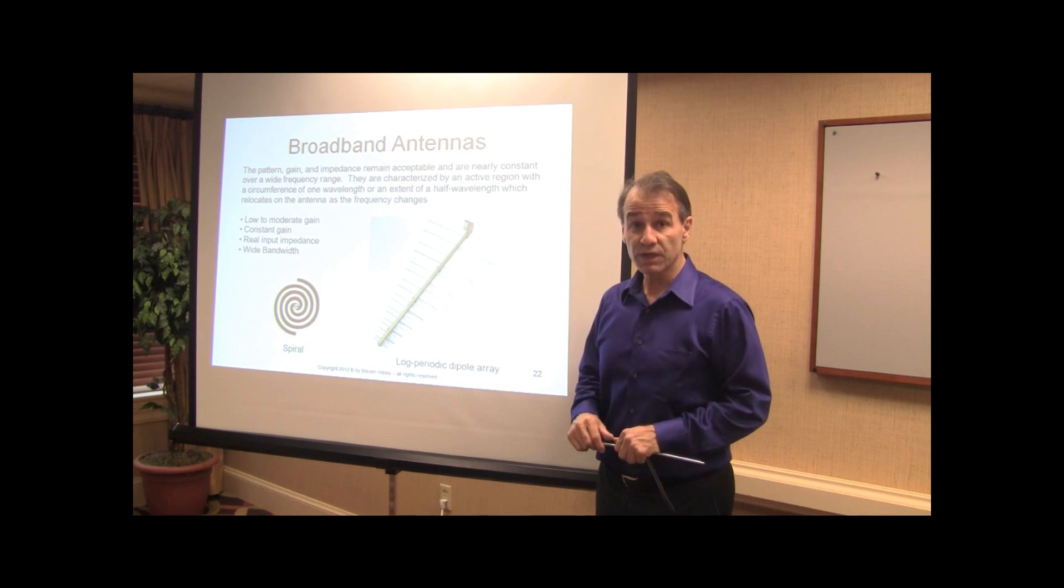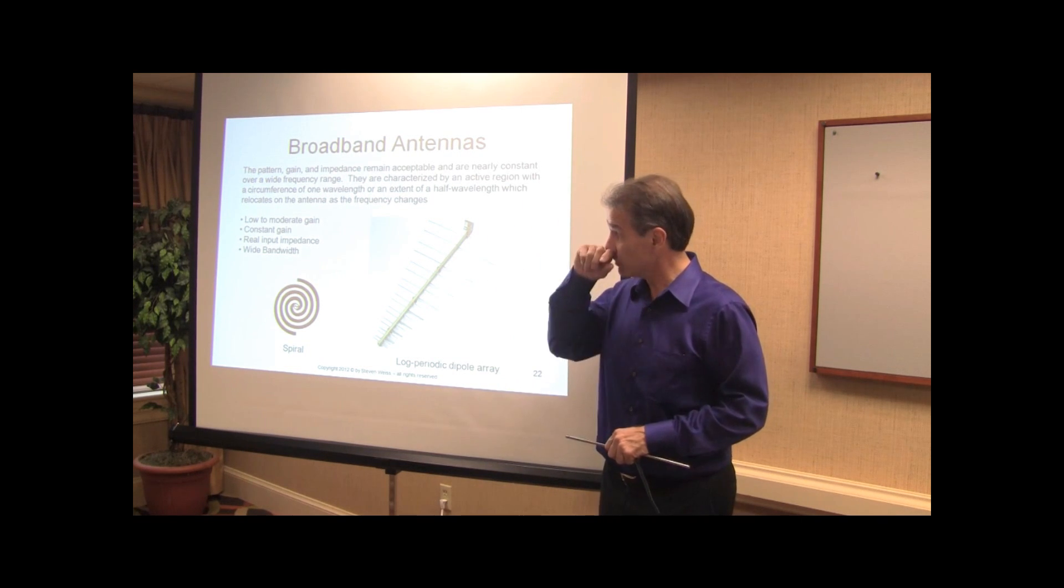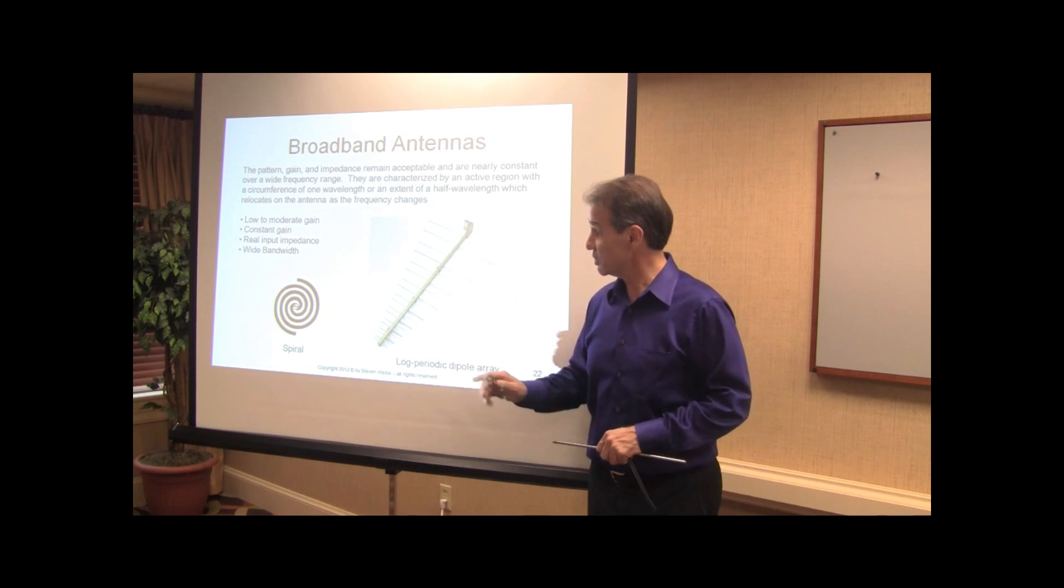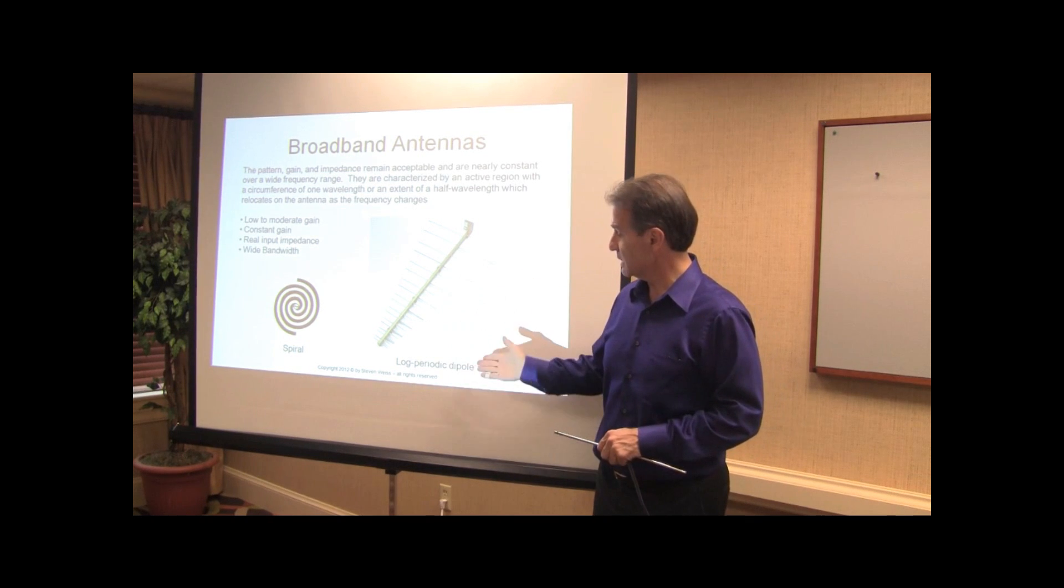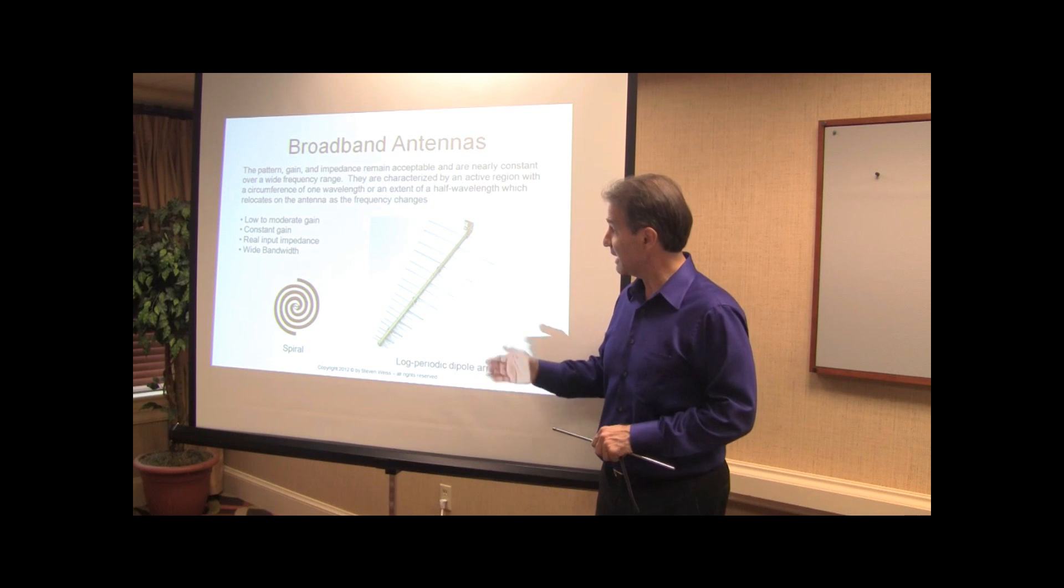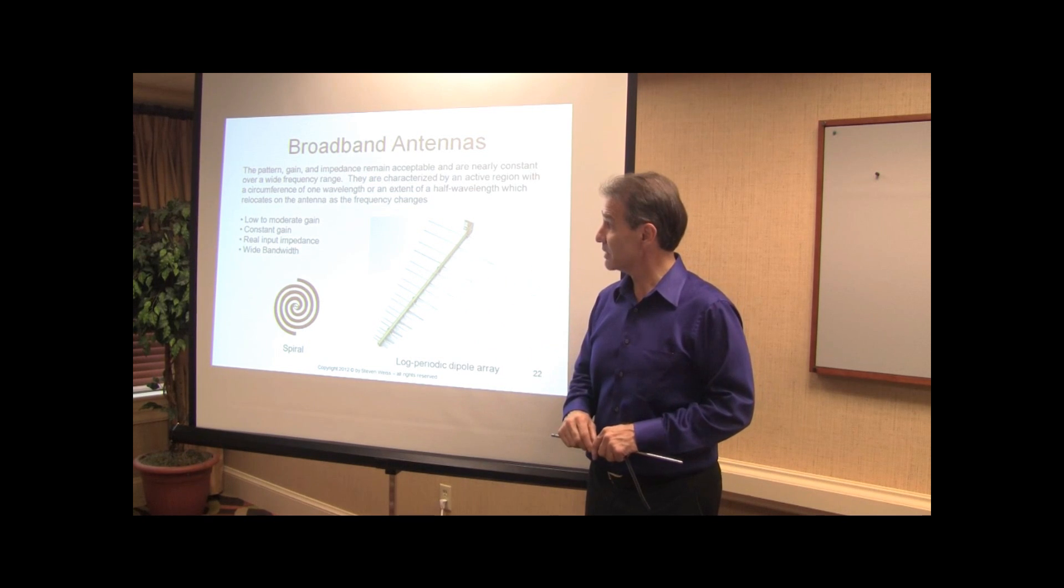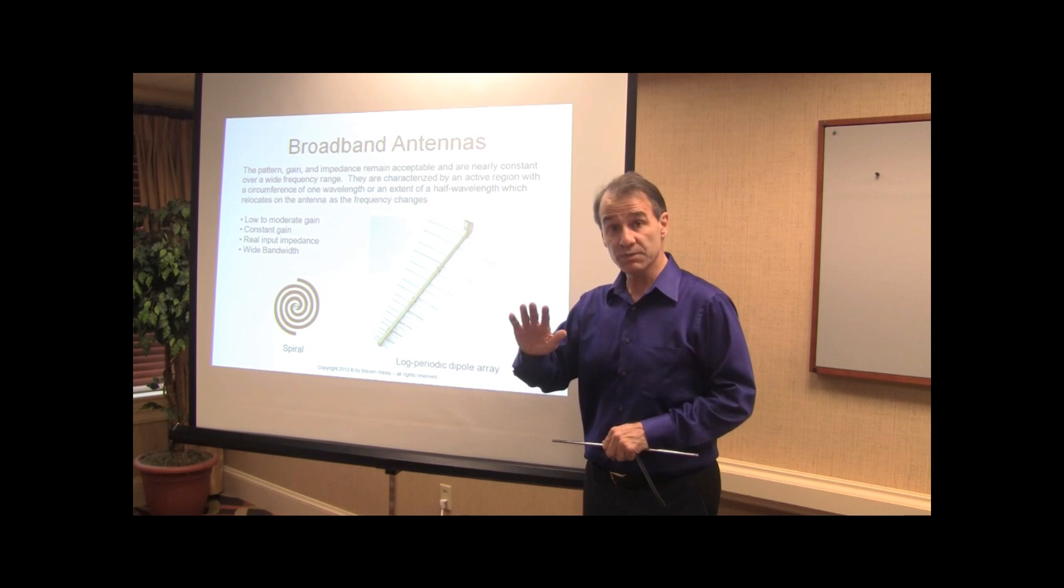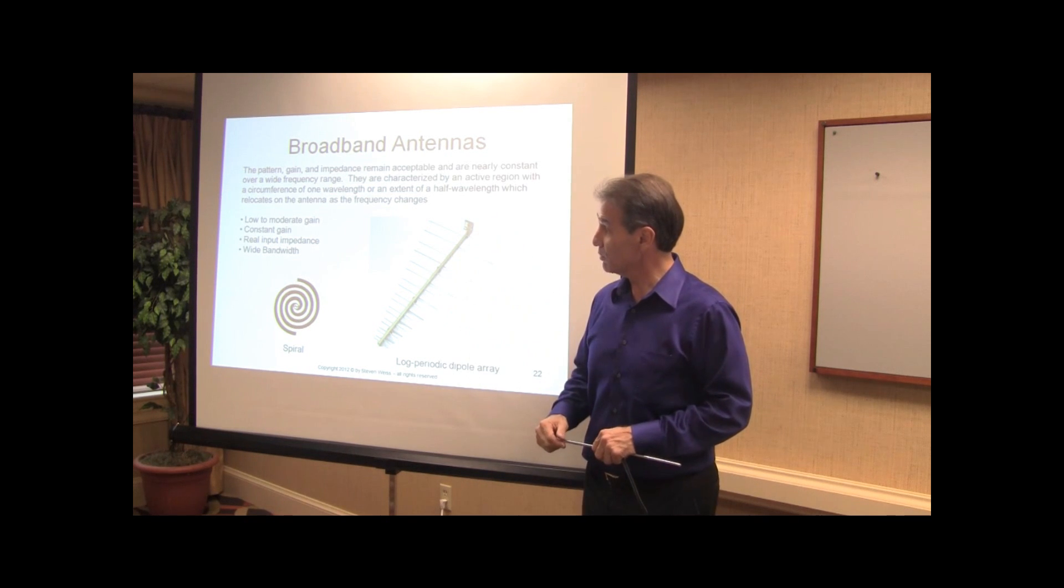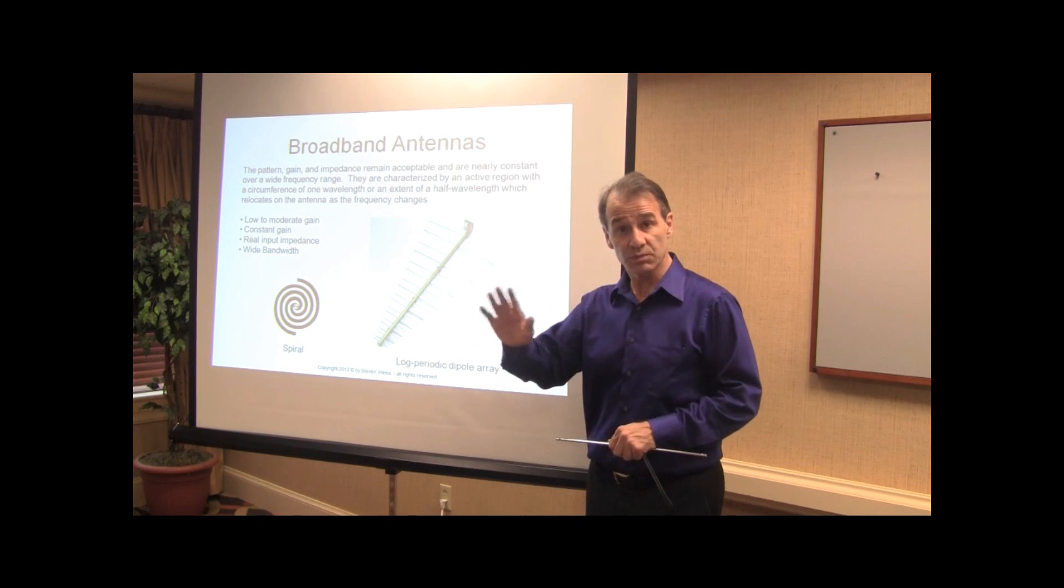Broadband antennas tend to be frequency independent, and so that's a very nice feature. Here I show a spiral antenna and a log periodic dipole array. These are characterized by low to moderate gain, but the gain tends to be constant, and a real part of the input impedance is reasonable to match to.